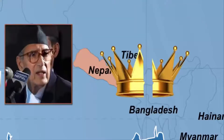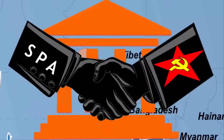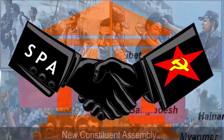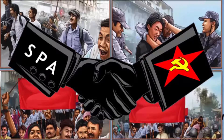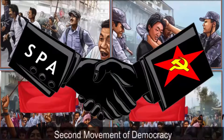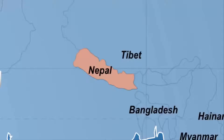The SPA and Maoists came to an understanding about the election of the new constituent assembly. This struggle and the people's movement came to be known as Nepal's second movement of democracy. The Nepali people have become a source of inspiration to all the democracies of the world.